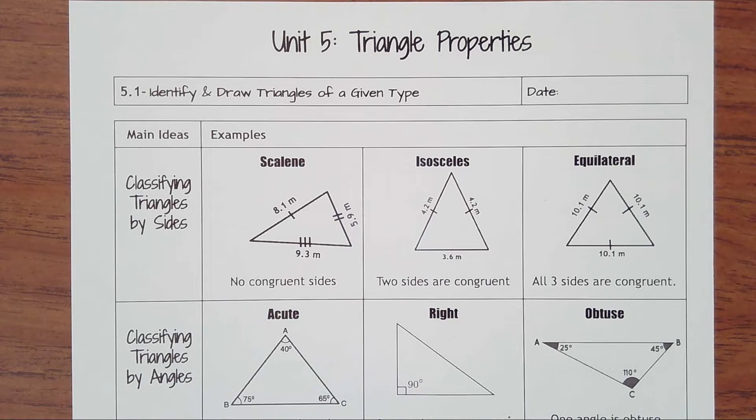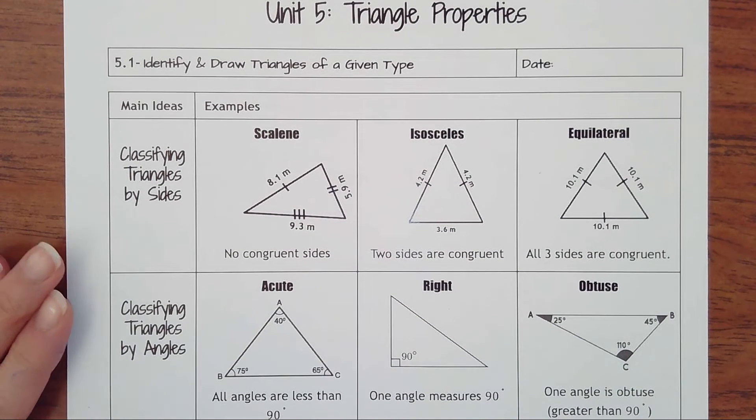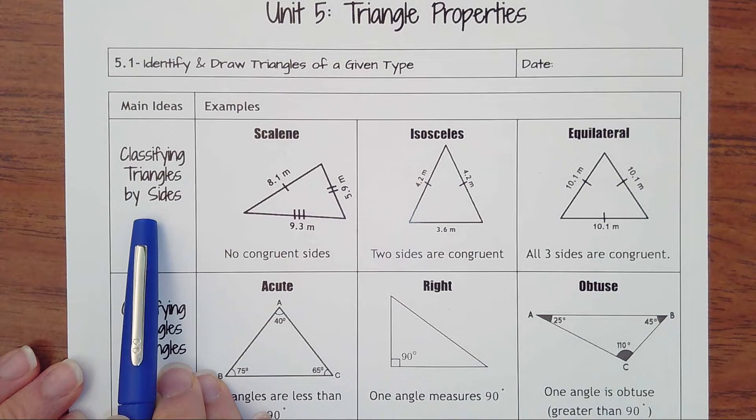Lesson 5.1, Identify and Draw Triangles of a Given Type. There's two different ways that we classify triangles. The first way is by the side lengths.